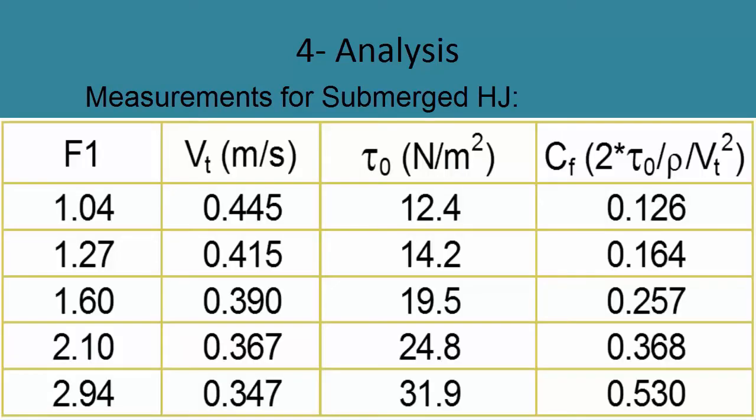For submerged hydraulic jump, measurements were: Froude number ranges from 1 to 3, tail velocity ranges from 0.45 to 0.35 meters per second, tau ranges from 12.4 to 31.9 Newtons per square meter. So skin friction coefficient was calculated and ranges from 0.13 to 0.53.